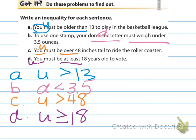So A: you must be older than 13 to play in the basketball league. Using U to represent you, U is greater than 13. You can be 14 or 15, but not 13 or 12. B: to use one stamp, your domestic letter must weigh under 3.5 ounces. Using D for the domestic letter, D is less than 3.5. If it's exactly 3.5 or 3.6 ounces, it's too much. If it's 3.4, you're okay.